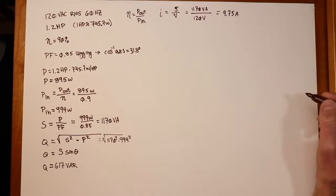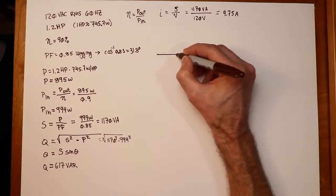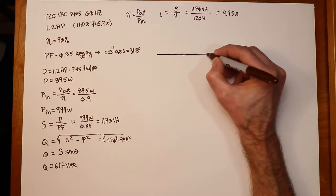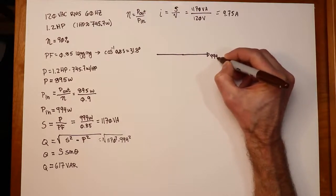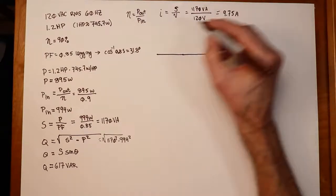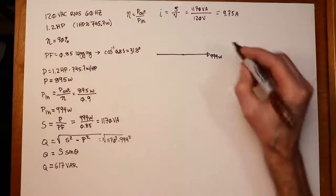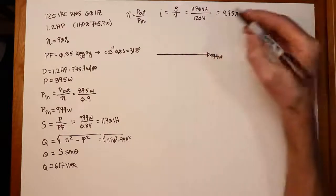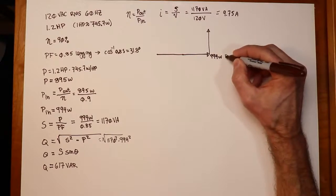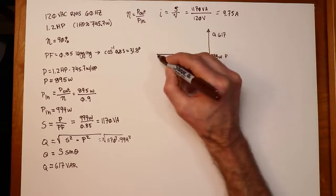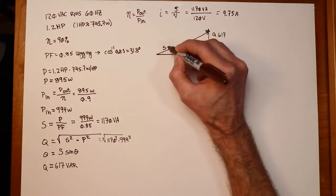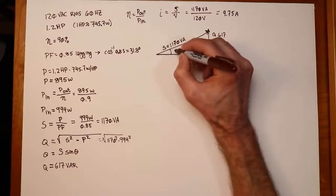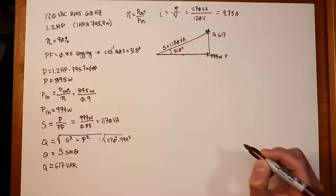Now, if we're going to draw a power triangle for this, we wind up with something that looks like this. Here's our real power. This is the 994, right there. So here's our 994 coming out here. This is inductive. It's lagging. It said it was lagging, so that's inductive. That's at 617. So let's see, that's going to be about 60-ish percent of that, maybe something like that. So this is P, this is Q at 617, and then S is sitting out like this at 1170 VA. And then this angle in here is the 31.8. Okay, beautiful.